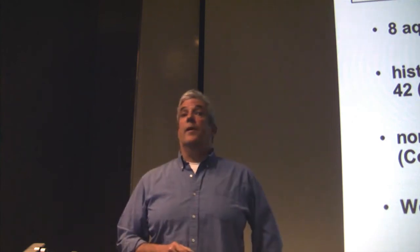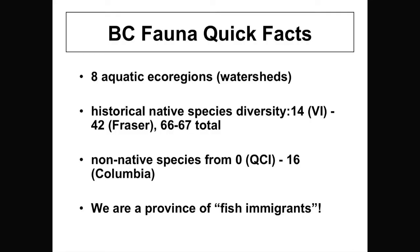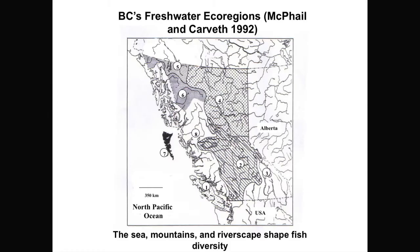And we are a province of fish immigrants. None of the species that we have actually originated in BC. Why is that? They came from somewhere else. Here are the eight aquatic ecoregions. I won't spend much time on here. I just want to mention that, so here's the Fraser, here's Vancouver Island, here's the Queen Charlotte, here's the Yukon, a very tiny portion up here. Basically, I want to make a point that the sea, mountains, and riverscape shape the fish diversity of BC. Freshwater fishes can't move from one river system into another unless they can swim down a river and up another river or into the ocean and up another river. So our diversity is organized by the spectacular topography we have. The mountains, the sea, and the riverscape. How steep a river is, that sort of thing.